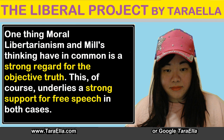One thing moral libertarianism and Mill's thinking have in common is a strong regard for the objective truth. This, of course, underlies a strong support for free speech in both cases. Moral libertarianism argues that liberalism is the most moral ideology because it never leads to the wrong suppressing the right. Mill makes similar arguments in his justification for free speech, but this point does not feature as strongly in his moral worldview. This appears to be because the justification for being committed to the truth is based on a fundamental belief that truth equals morality in moral libertarianism, whereas it is based on utilitarian grounds in Mill's philosophy.